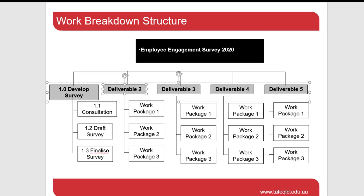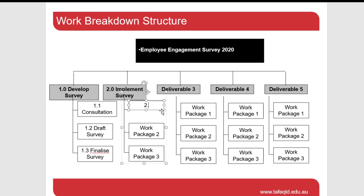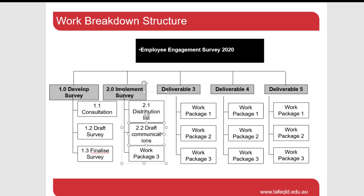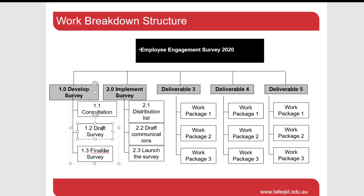For Deliverable 2.0 we need to implement the survey — and remember our scope of work was to all staff. Work packages for implementing the survey could include: 2.1 — organise a distribution list if one isn't already available, 2.2 — draft some communications, and 2.3 — launch the survey. Once again, there would be subtasks under each of these. One thing to notice is that these boxes should have fairly short names, and each box should be named differently to avoid confusing stakeholders.